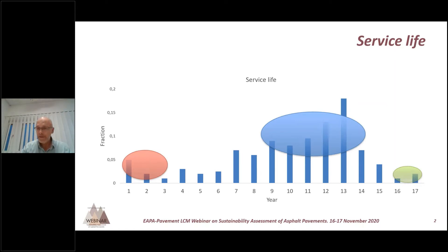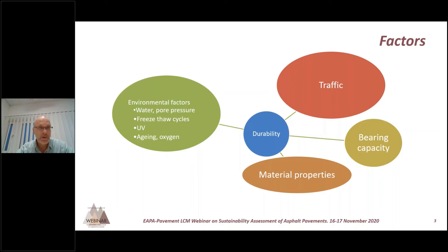The ultimate approach to determine or improve service life is to understand the distress mode and the failure mechanism you would like to address. To summarize: durability is not a material property — it is the combination of the material, the traffic, and environmental factors like water, freeze-thaw cycles, ultraviolet radiation, oxygen, and aging. It could also be a result of poor bearing capacity of the road. The more you know about the roads or materials you are looking at, the more targeted an approach you can use in durability assessment.